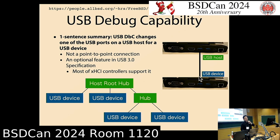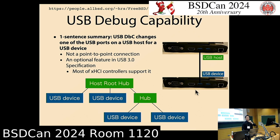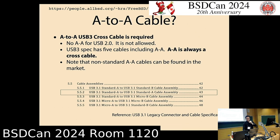A USB host and a USB device can be connected, but the connector is still USB-A. So you need an A-to-A connection using a special cable. It is not a normal cable, so it may be difficult to find. However, the cable is specified in the XHCI specification — see the USB 3.1 legacy connector section 5.5.2, A-to-A cable assembly.